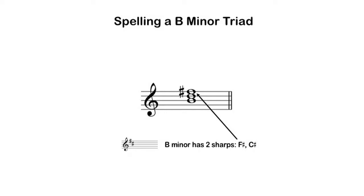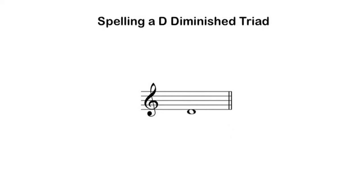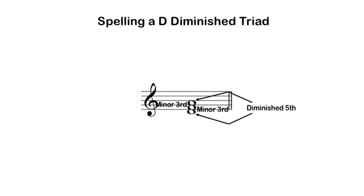Let's move on to diminished triads, and let's build one on D. D is my root, and I write my thirds above it, so I know I'll have some flavor of F and some flavor of A. From root to third, I need a minor third. From third to fifth, I need another minor third.